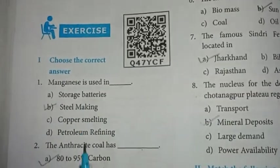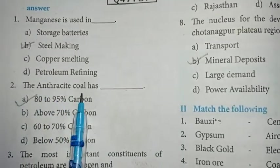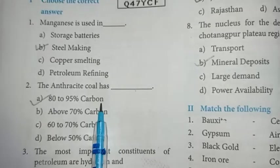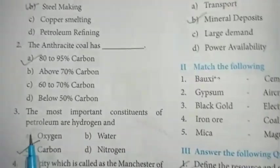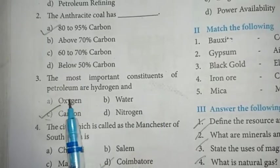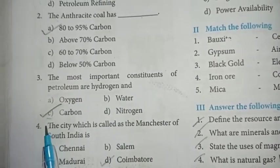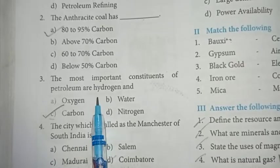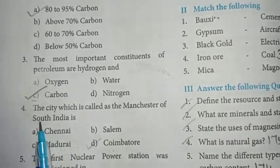Second one: the anthracite coal has 80 to 95 percent carbon. Option A is the right answer. Third one: the most important constituents of petroleum are hydrogen and carbon - hydrocarbon. Option C, carbon, is the right answer.